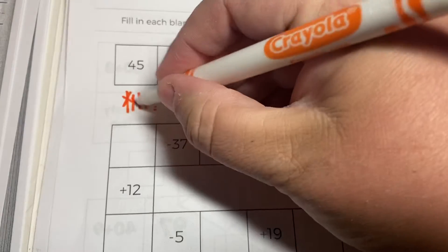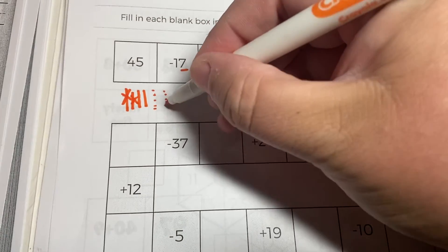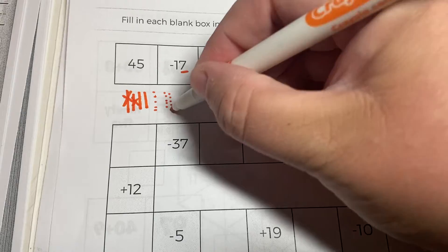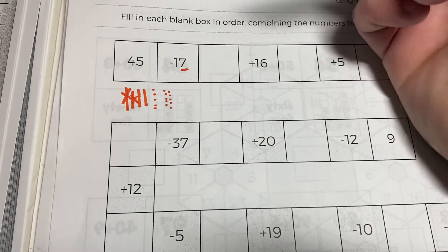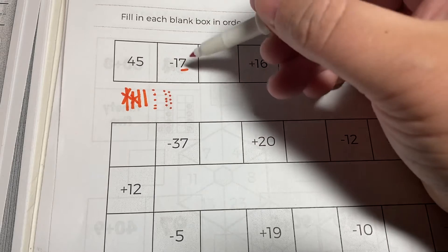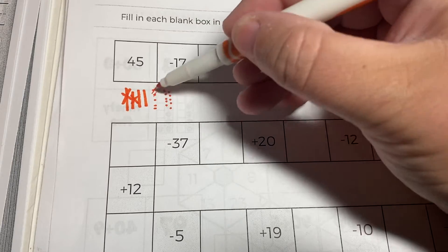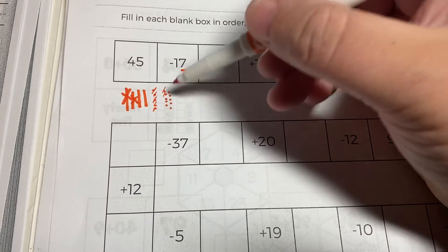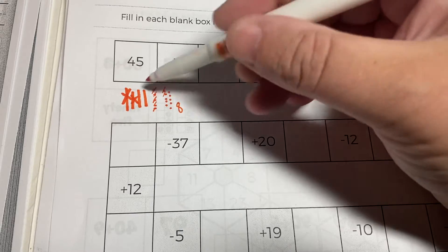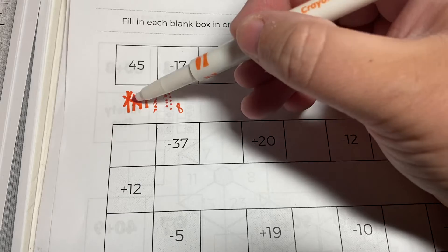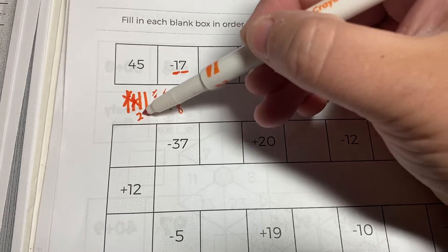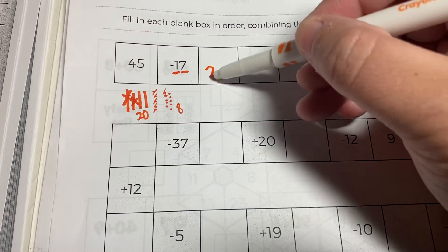So I'm going to trade a ten for ten little ones. One, two, three, four, five, six, seven, eight, nine, ten. Okay, now I can get rid of seven: two, three, four, five, six, seven. That leaves me with eight ones. This is the one ten that I crossed off, and this is the ten that I traded. So it leaves me with two tens—20—and eight, which is 28.